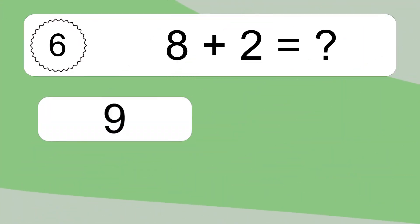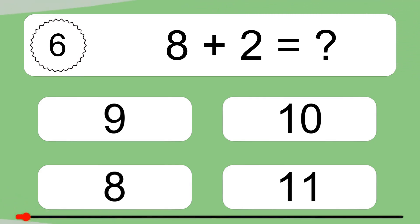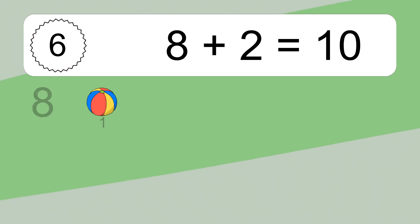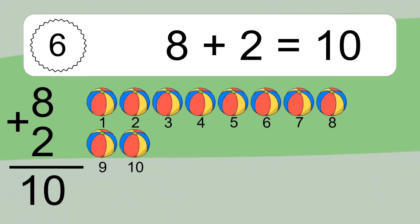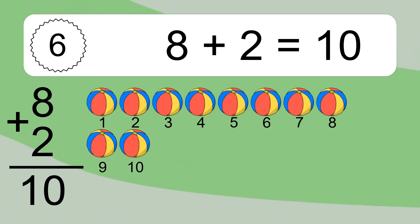8 plus 2 equals what? 8 plus 2 equals 10. Let's count it. 1, 2, 3, 4, 5, 6, 7, 8, 9, 10.